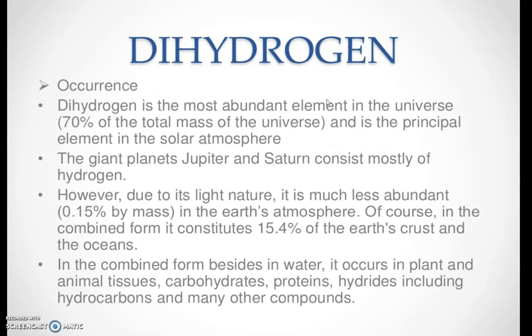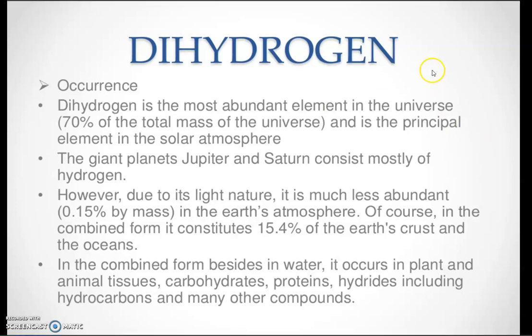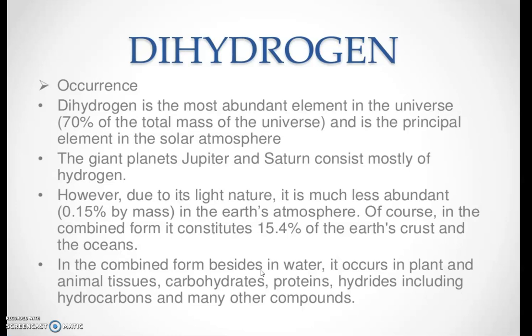Dihydrogen is H₂. It is the most abundant element in the universe and is a principal element in the solar atmosphere. The giant planets like Jupiter and Saturn consist mostly of dihydrogen. It is very light in nature and much less abundant in the Earth's atmosphere. In combined form, it occurs in water, plant and animal tissues, carbohydrates, proteins, hydrocarbons, and many other compounds.